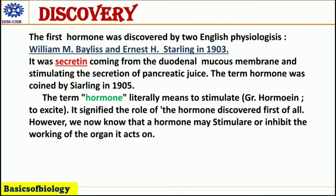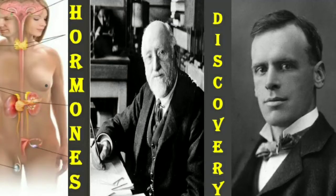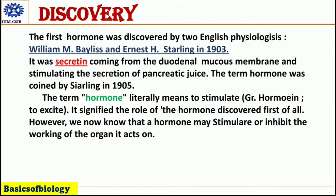The first hormone was discovered by two English physiologists, William M. Bayliss and Ernest H. Starling, in 1903. It was secreted from the duodenal mucous membrane and stimulated the secretion of pancreatic juice. The term 'hormone' was coined by Starling in 1905; it literally means 'to stimulate,' signifying the role of that first discovered hormone. However, we now know that a hormone may either stimulate or inhibit the working of the organ it acts on.